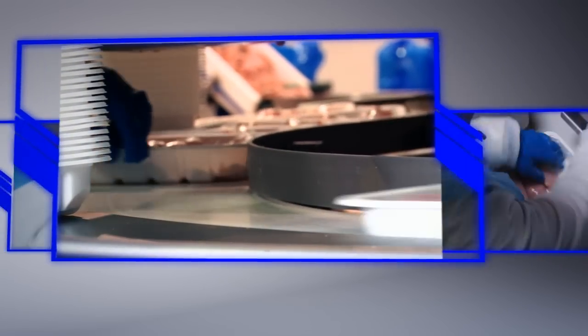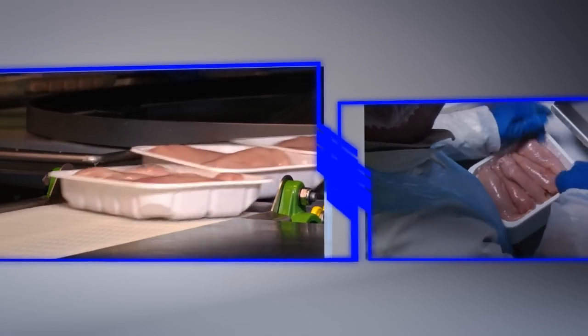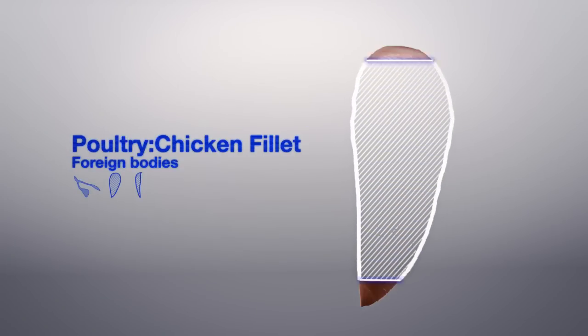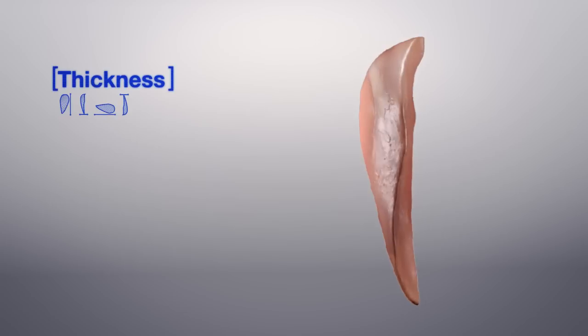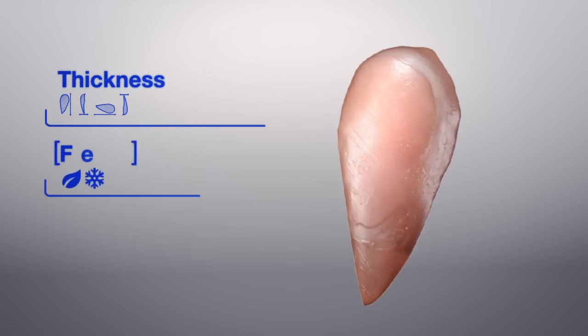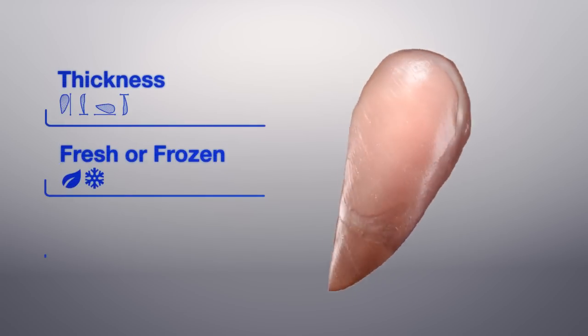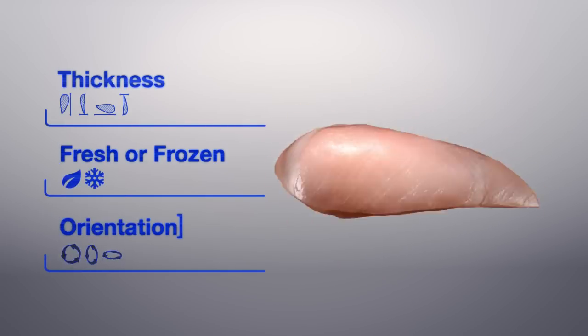For boneless poultry products such as chicken breast fillets or nuggets, the detection of calcified bone is paramount to the safety of consumers. But bone poses particular challenges for inspection. The meat and bone can vary in thickness. The product may be fresh or frozen and orientation affects results.